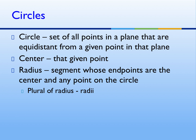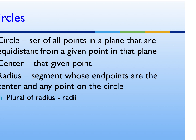A circle is the set of all points in a plane that are equidistant from a given point in that plane. Go ahead and copy down that definition, and then I want us to actually draw it out. Draw just a dot. In Notability you can draw a circle around that dot and hold it to create a perfect circle. The circle by definition means all of the points on the circle are the same distance from that point in the middle.